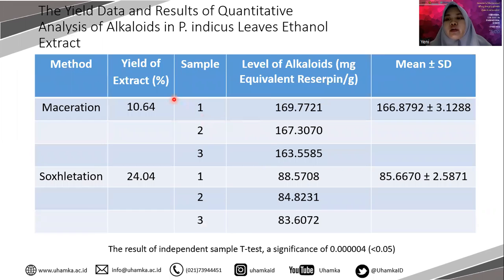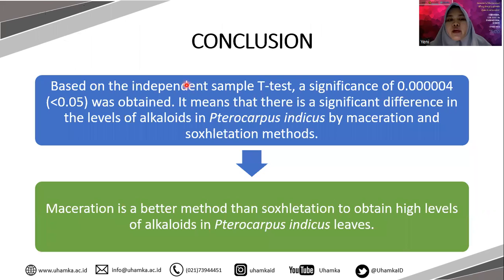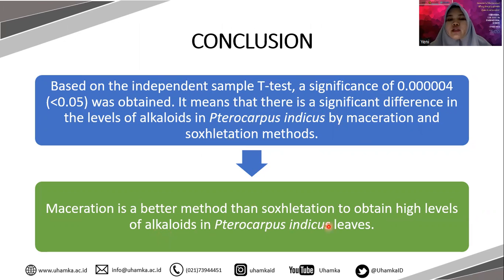The yield of extraction for Leucorpus Indicus powder from the maceration extract was less than the soxhletation extract. However, the level of alkaloids in Leucorpus Indicus leaves ethanol extract using the maceration method is higher than using the soxhletation method. Based on the independent sample t-test, a significance value of less than 0.05 was obtained, meaning there is a significant difference in the level of alkaloids between maceration and soxhletation methods. Therefore, maceration is the better method to obtain a high level of alkaloids in Leucorpus Indicus leaves.